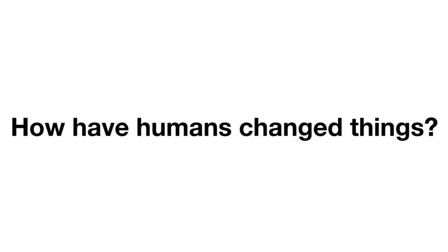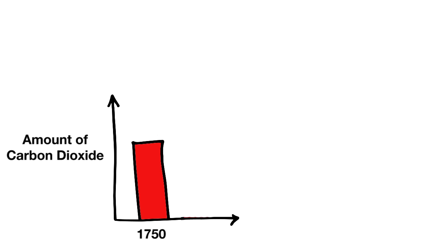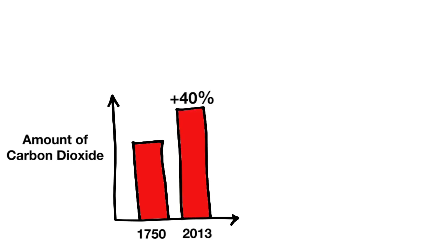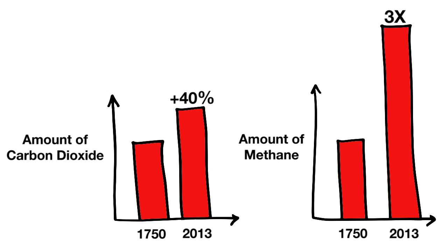So, how have humans changed things? Since the dawn of the industrial age, around the year 1750, atmospheric carbon dioxide has increased by 40%, and methane has almost tripled. These increases cause extra infrared light absorption,